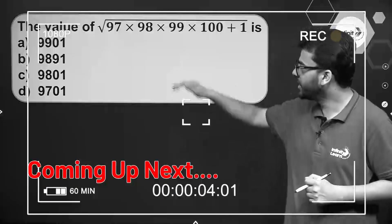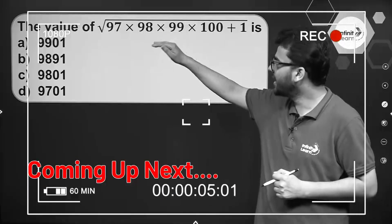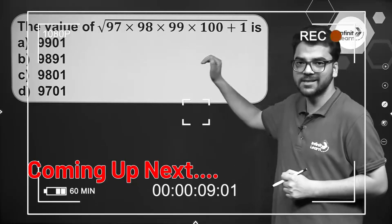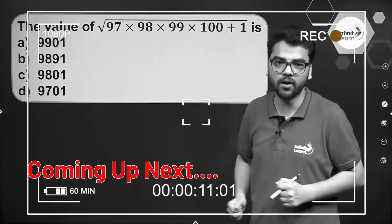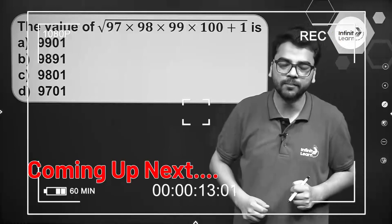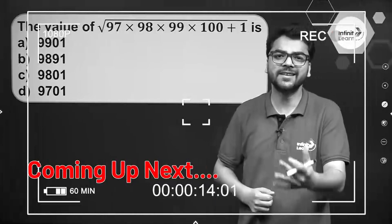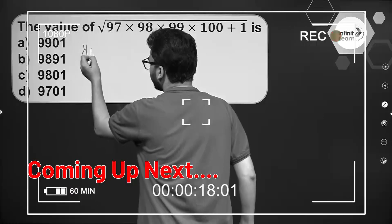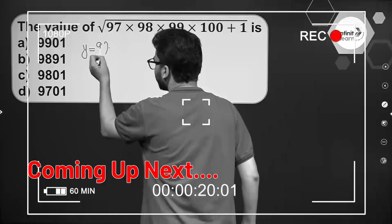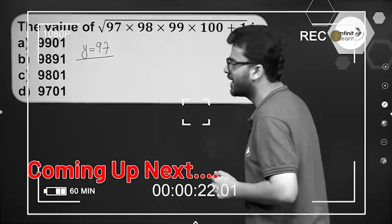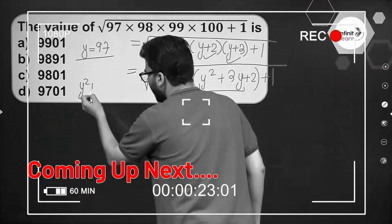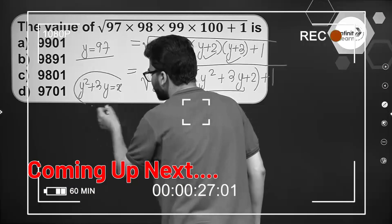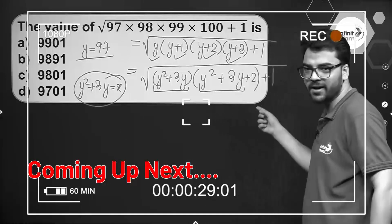We have a question in which 97 × 98 × 99 × 100 + 1 is given inside a square root and we have to find its value. There is a trick to solve these types of questions. We assume that y is equal to 97, and we can take y² + 3y to be equal to x for some time.